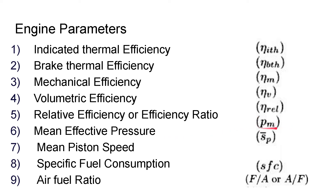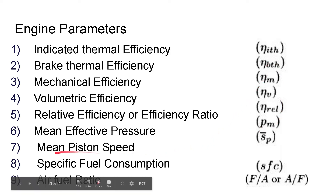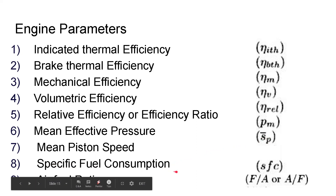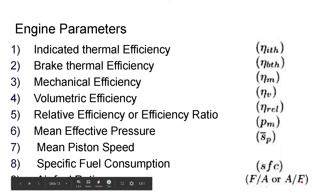There are two or three mean effective pressures defined — one based on indicated power and another on brake power. Then there is mean piston speed SP-bar, specific fuel consumption SFC, and air-fuel ratio, which can be expressed as F/A or A/F. You need to read this carefully — it should be fuel-air ratio or air-fuel ratio — as confusion here can cause major errors when solving problems. Generally, fuel-air ratio is around 1:15 and air-fuel ratio is 15:1.